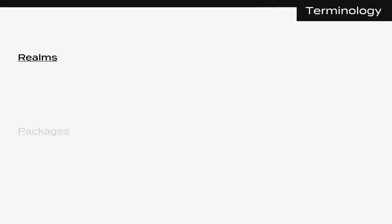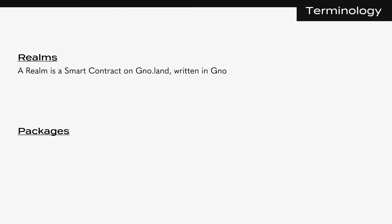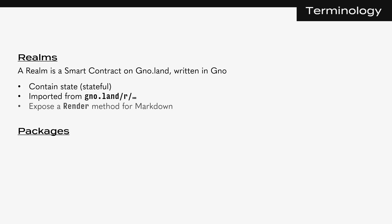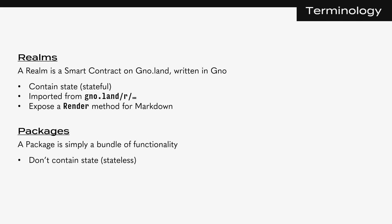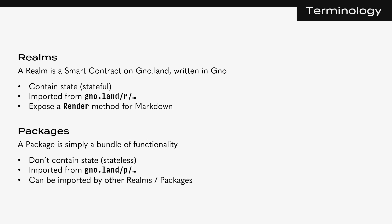There are two concepts central to how Gnoland works: realms and packages. A realm is simply a smart contract on Gnoland written in GNO. Realms hold some kind of application state — meaning they're stateful. You can import realms using the gno.land/r syntax in your .gno files. There's also a render method for realms that lets them publicly expose their internal state. Packages, on the other hand, are bundles of functionality like libraries — they do not hold any state and are imported using the gno.land/p syntax. Packages can be imported and used by other realms and packages within the ecosystem.